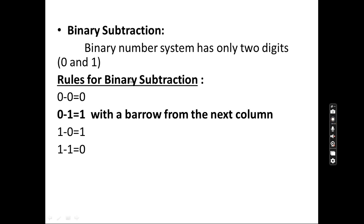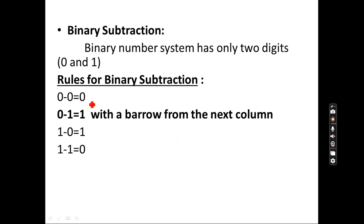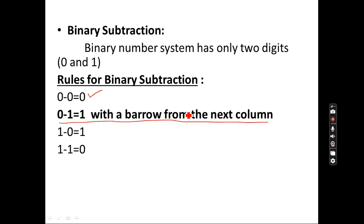Now for subtraction, these are the rules you need to remember: 0 − 0 = 0; 0 − 1 = 1 (with a borrow). These are very important rules. The reason 0 − 1 gives 1 will become clear when I explain it with a problem in the next video.